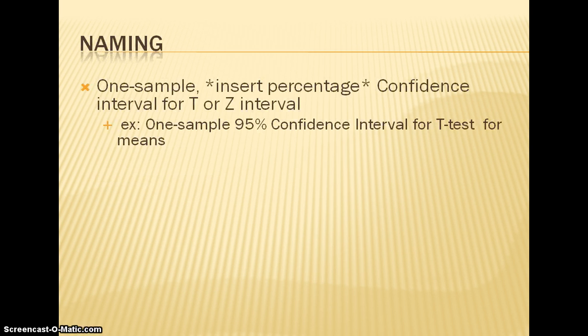When you name, you must list whether you are working with a one sample or two sample. In this case, we will only be focusing on one sample. You must insert the percentage confidence interval that you will be working with, and you must also include whether you are going to be working with a t-test interval or a z-test interval, and whether or not it is for means or proportions. An example would be a one sample 95% confidence interval for a t-test for means.